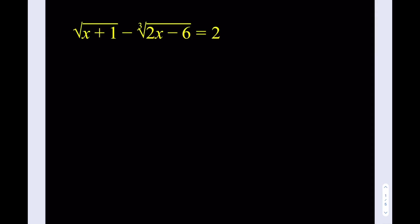Hello, everyone. In this video, we're going to be solving a very, very radical equation. We have the square root of x plus 1 minus the cube root of 2x minus 6 equals 2, and we're going to be looking for all possible solutions.